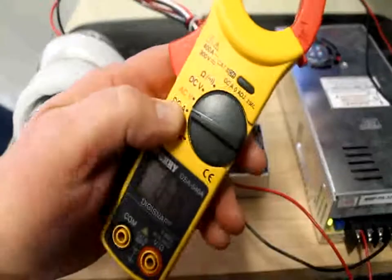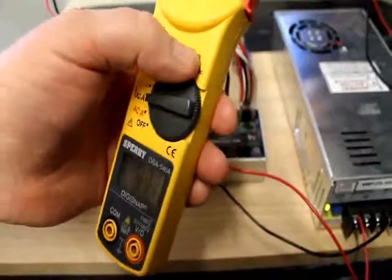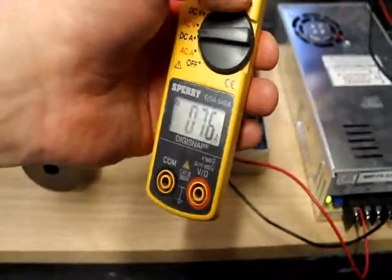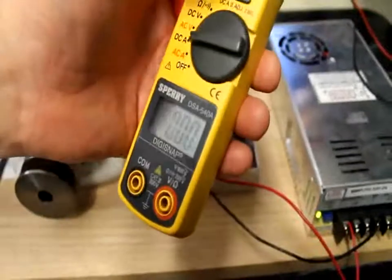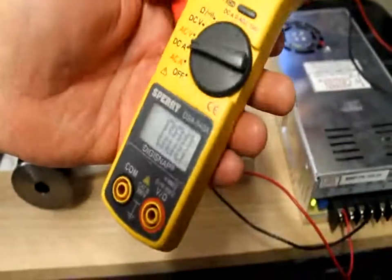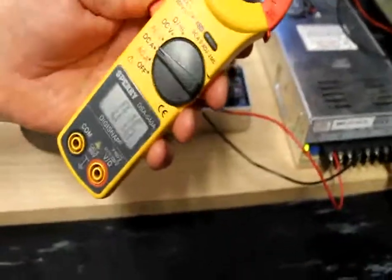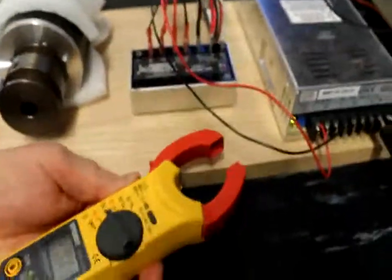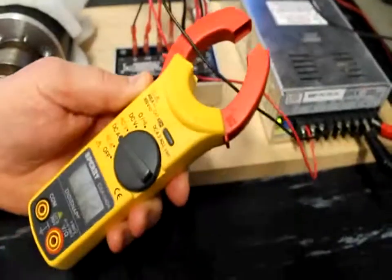You turn the dial to DC ampere, hit the zero adjust button to bring the meter back to zero, and then simply open the jaws of the clamp and clamp around one of the power wires.